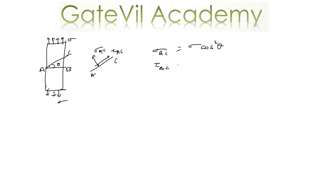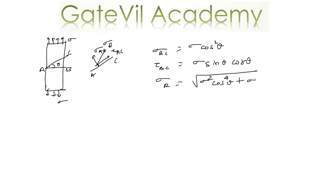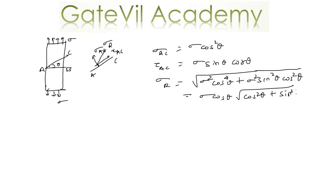The resultant of these stresses Sigma_r would be the square root of Sigma squared cos to the power 4 theta plus Sigma squared sine squared theta cos squared theta. Sigma cos theta comes out of the root, and you have cos squared theta plus sine squared theta which equals 1, so the resultant stress is Sigma cos theta.